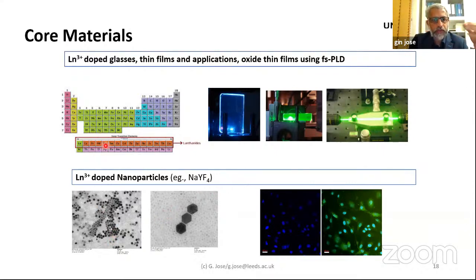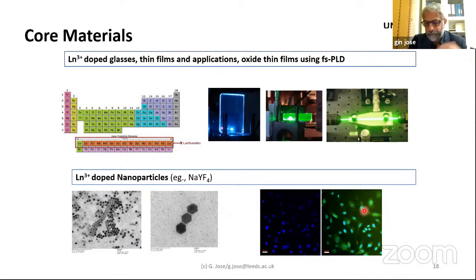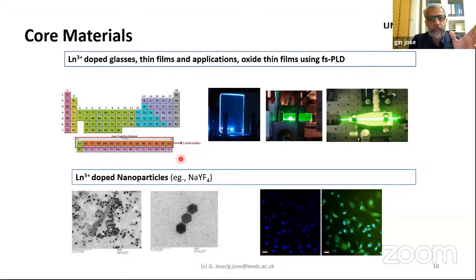These lanthanide ions can also be introduced into very small particles — nanoparticles. These particles can emit visible light when excited with infrared light. This is very important for applications like biological imaging and biosensing. Most of this research involves use of ions in different host materials, either in nanoparticles or in glasses produced using chemical methods or laser deposition.